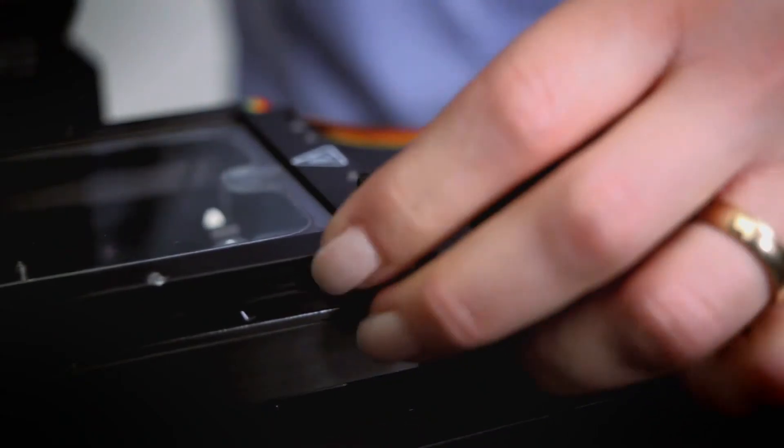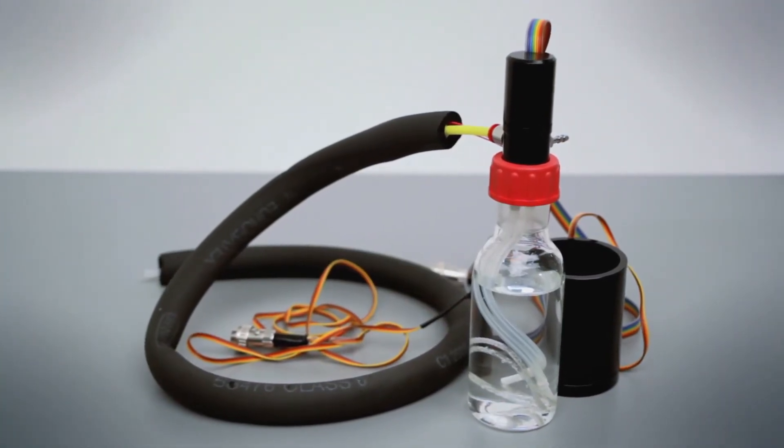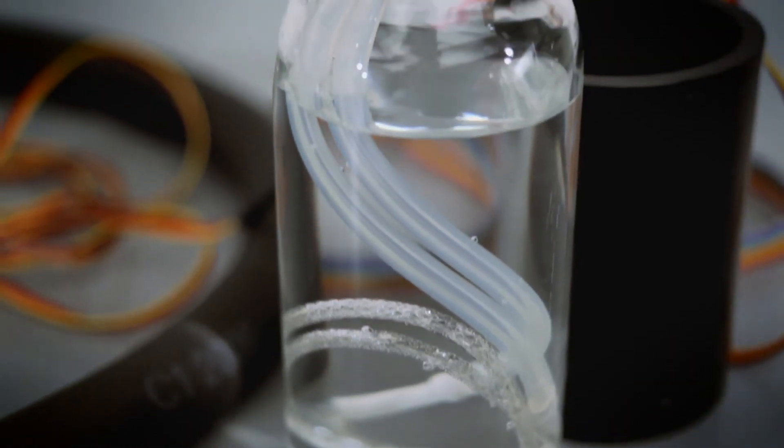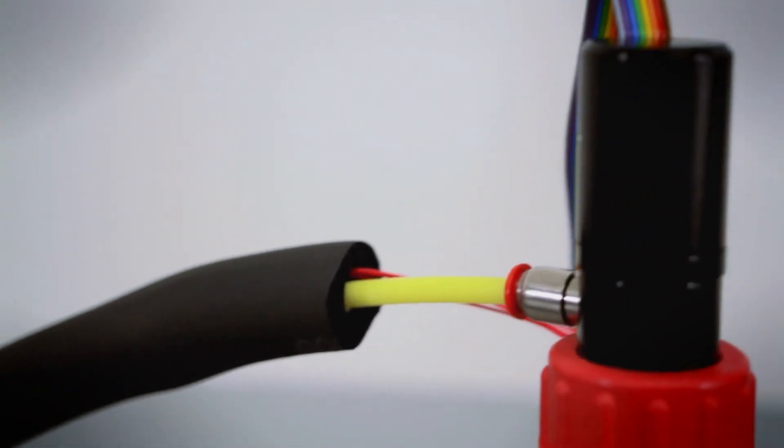Before entering into the chamber, the gas is humidified by the active humidity module which employs a water permeable membrane, a humidity sensor and a heated tube to ensure the desired relative humidity inside the chamber.